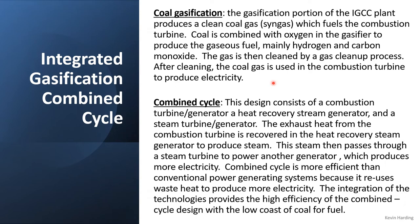Once cleaned, the syngas goes into the combustion turbine to generate electricity — that is the combined cycle step. The clean gas enters a combustion turbine or generator along with a heat recovery steam generator and a steam turbine generator. Exhaust heat from the combustion turbine is recovered so that no heat is wasted, with that recovered heat producing steam to power additional turbines and generate more electricity.